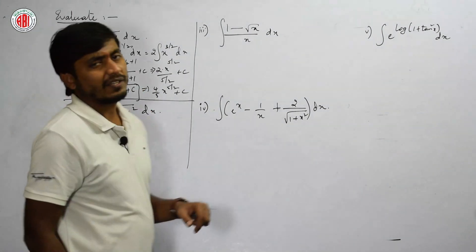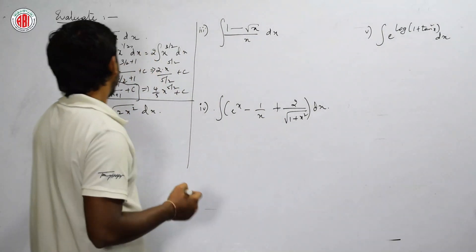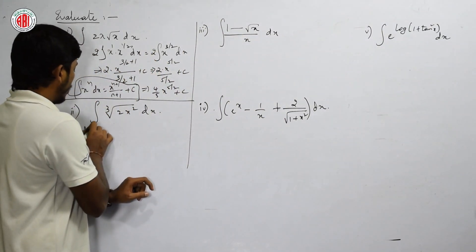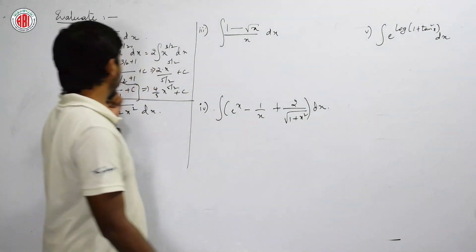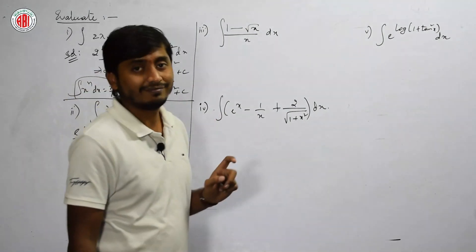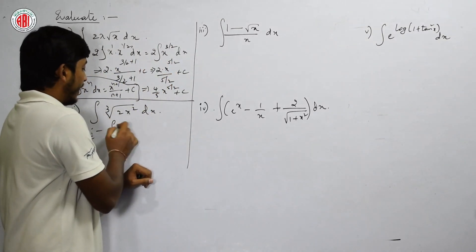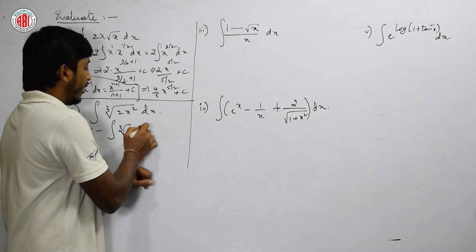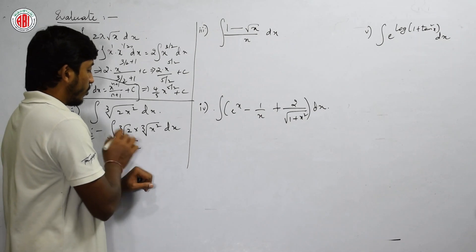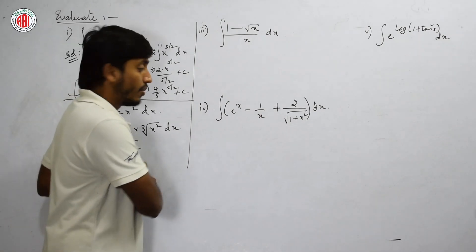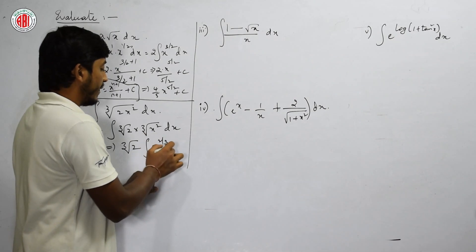Write the formula for basic questions. Next: ∫∛(2x²) dx. Do we have any formula for cubic root? Even if we have a cubic root, we will use only the x^n formula. We have to convert and segregate this. So here it will be ∫x^(2/3) dx.